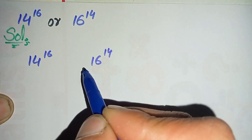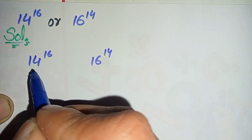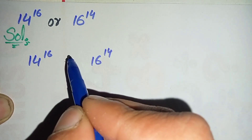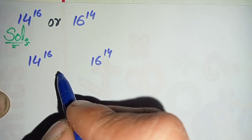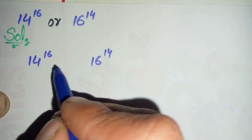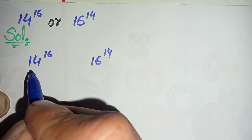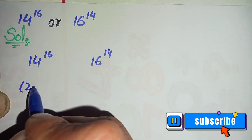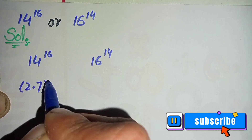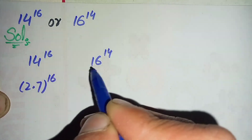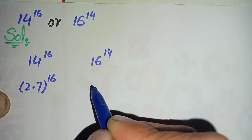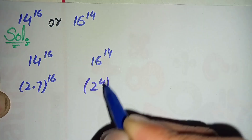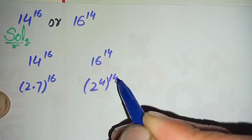To compare these two numbers, we will try to make either their bases the same or their powers the same. Here we will make their powers the same and then compare their bases. We can write 14 as 2 times 7, raised to power 16, and 16 as 2 raised to power 4, raised to power 14.